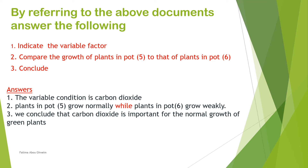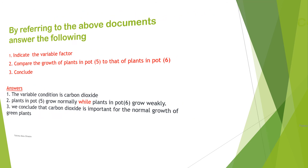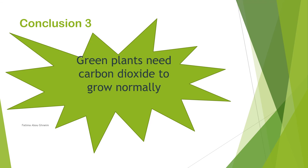Answers: the variable condition is carbon dioxide. Plants in pot 5 grow normally, while plants in pot 6 grow weakly. We can conclude that carbon dioxide is very important for the normal growth of green plants. Conclusion 3: green plants need carbon dioxide to grow normally, and without carbon dioxide there is no normal growth for the green plant.